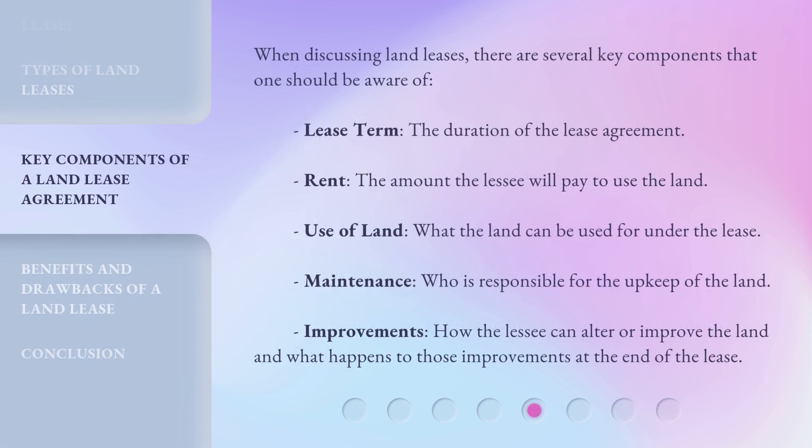When discussing land leases, there are several key components that one should be aware of: lease term — the duration of the lease agreement; rent — the amount the lessee will pay to use the land; use of land — what the land can be used for under the lease; maintenance — who is responsible for the upkeep of the land; and improvements — how the lessee can alter or improve the land and what happens to those improvements at the end of the lease.